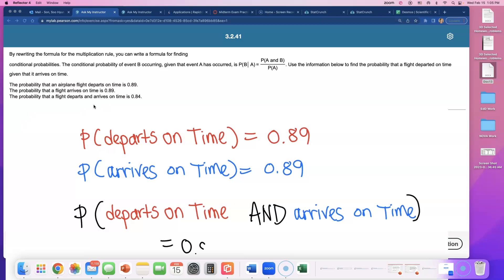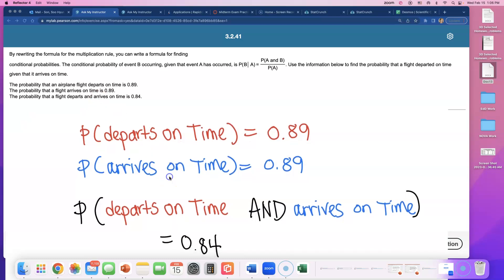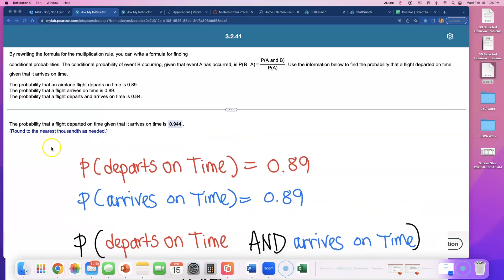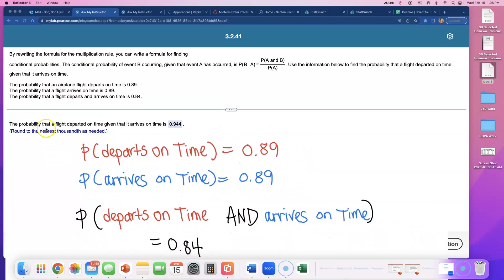So what do they want? They gave us individual probabilities and they gave us the probability of them happening both. So they're asking what is the probability that a flight departed on time.